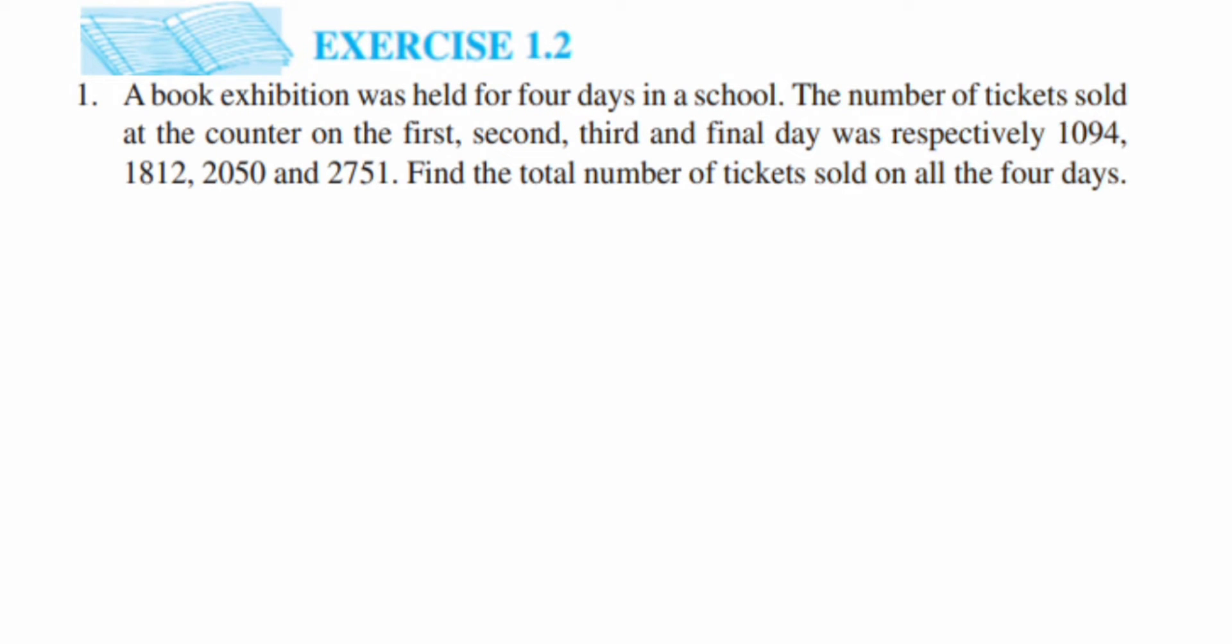At the counter on the first, second, third, and final day was respectively 1094, 1812, 2050, and 2751. Find the total number of tickets sold on all the four days.